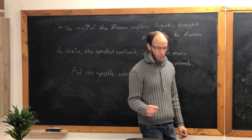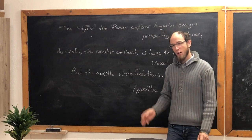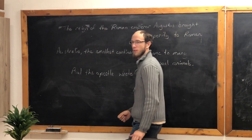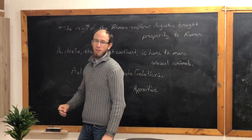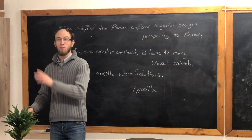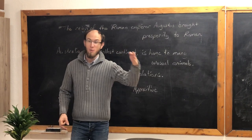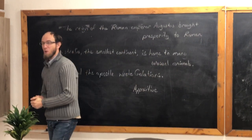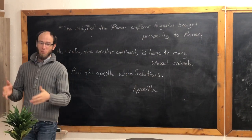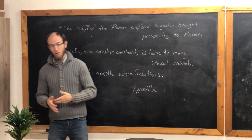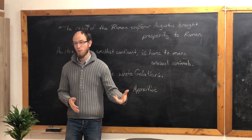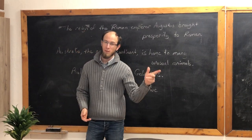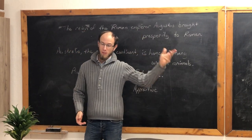What kind of complements follow action verbs? Direct object or indirect object. What kind of complements follow linking verbs? Predicate nominative and predicate adjective. Good.